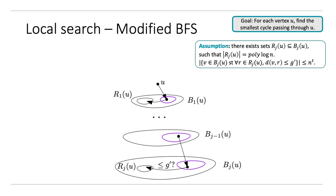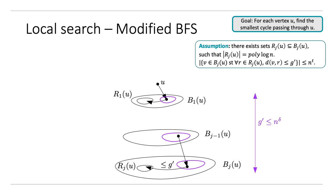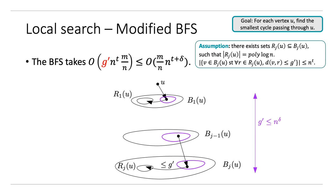To compute the time that we've spent: we keep only the purple nodes and there are only N to the t of them in each level, and each has degree order M over N. We have g prime levels, which is at most N to the delta. So the time the BFS takes is the number of levels times the number of nodes in each level times the degree of each vertex, which is at most M over N times N to the t plus delta. We do BFS from all nodes, so we have a total running time of MN to the t plus delta, and we're good as long as t plus delta is less than 1.